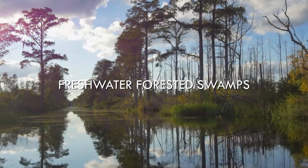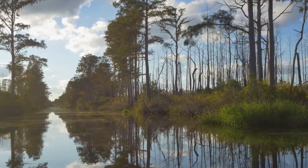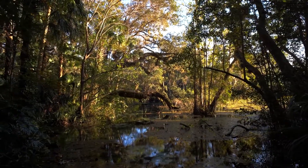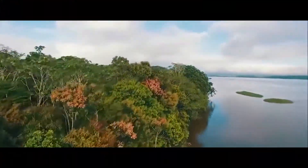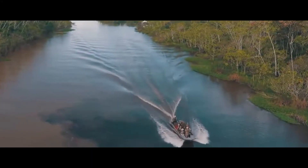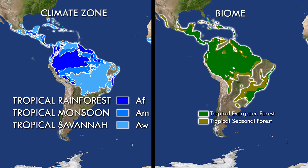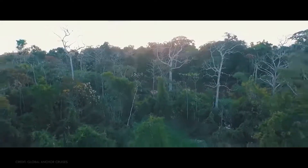Freshwater forested swamps have similar water dynamics to the marshes just covered — large flat areas either permanently or frequently flooded with fresh water — but the primary vegetation is trees instead of grasses and sedges. They occur in tropical and temperate regions. The largest is one of the largest wetlands in the world: the central part of the Amazon River basin that floods over an enormous area for months during the wet season. This flooding accounts for the wider distribution of evergreen forest, as the flooding lasts well into the dry season and provides sufficient water for the trees to continue growing.